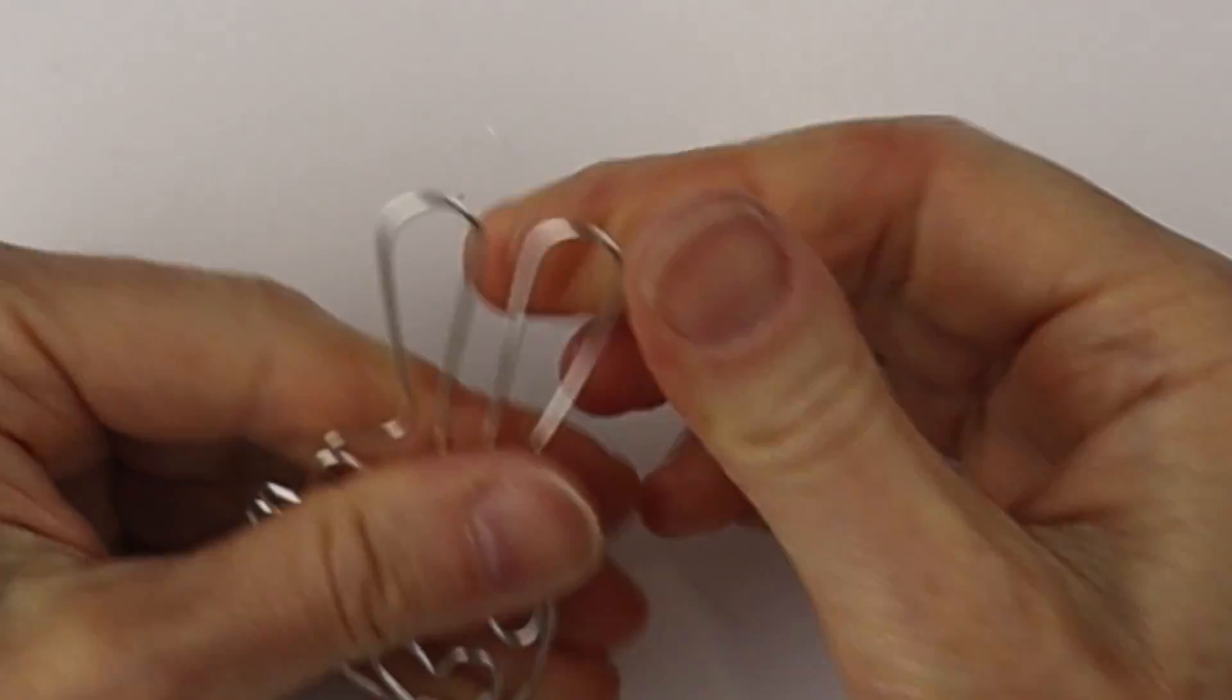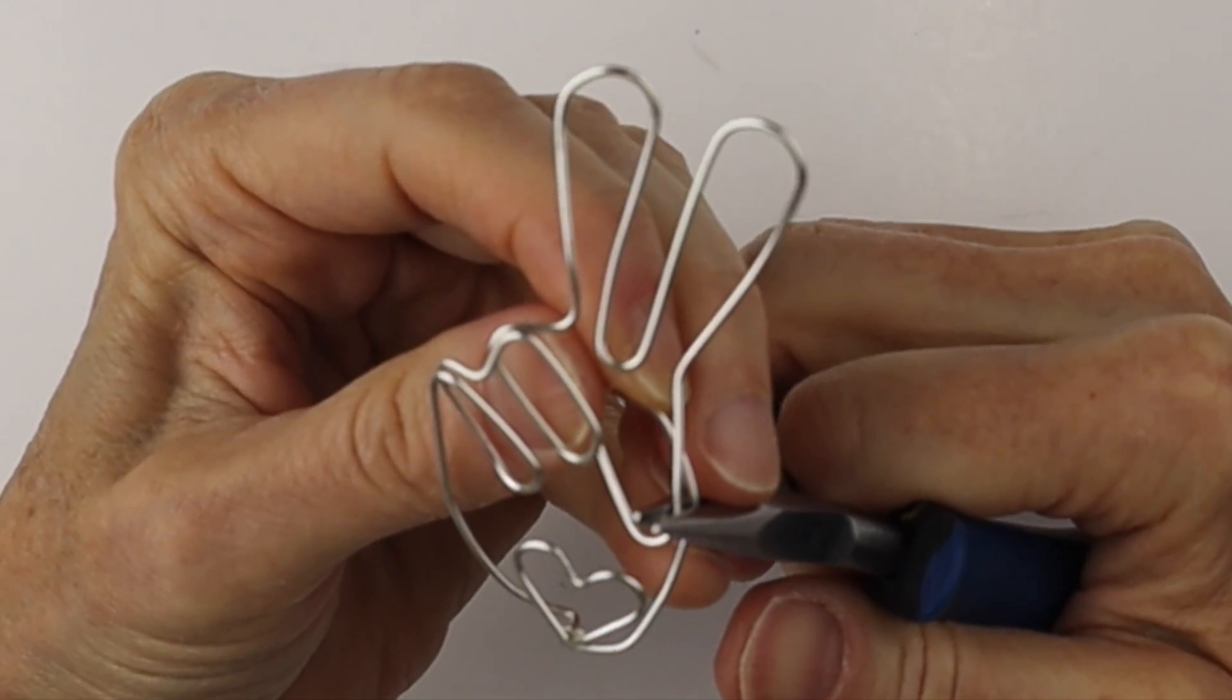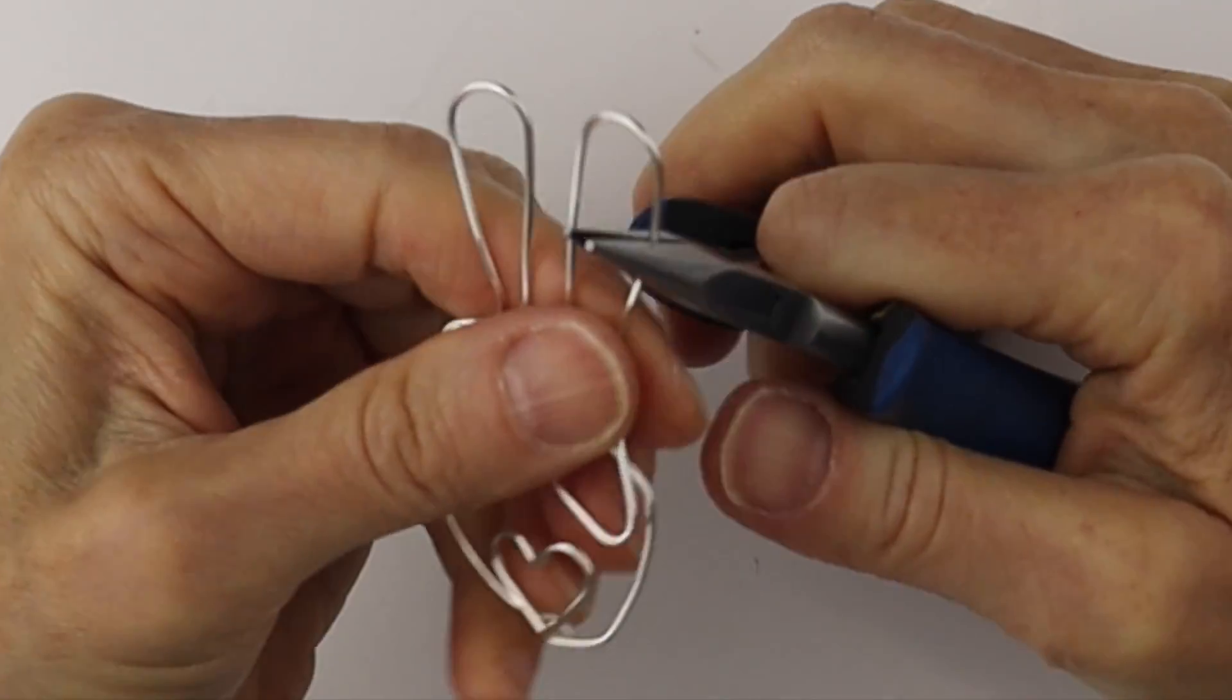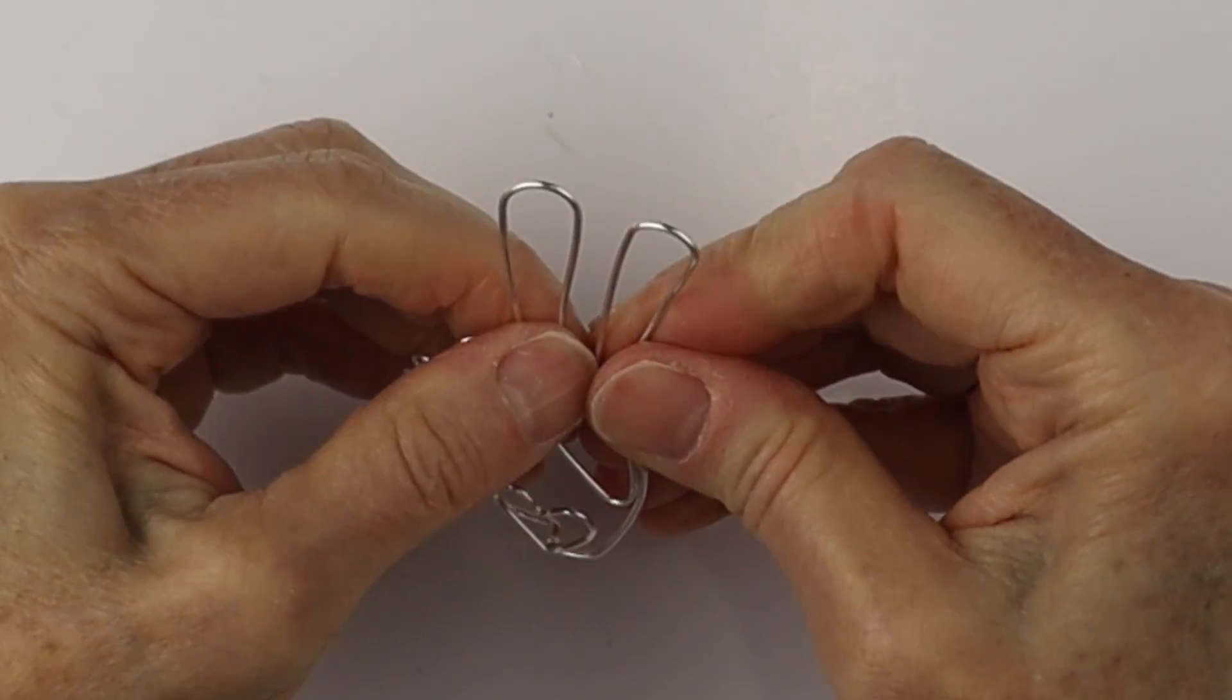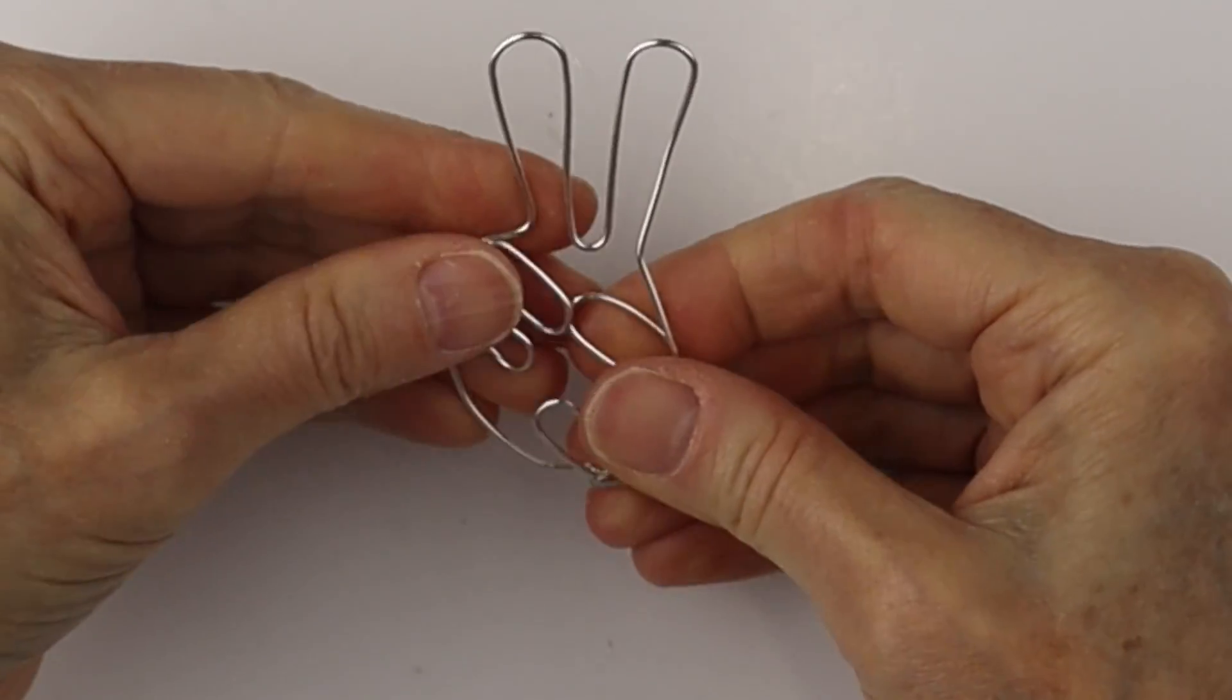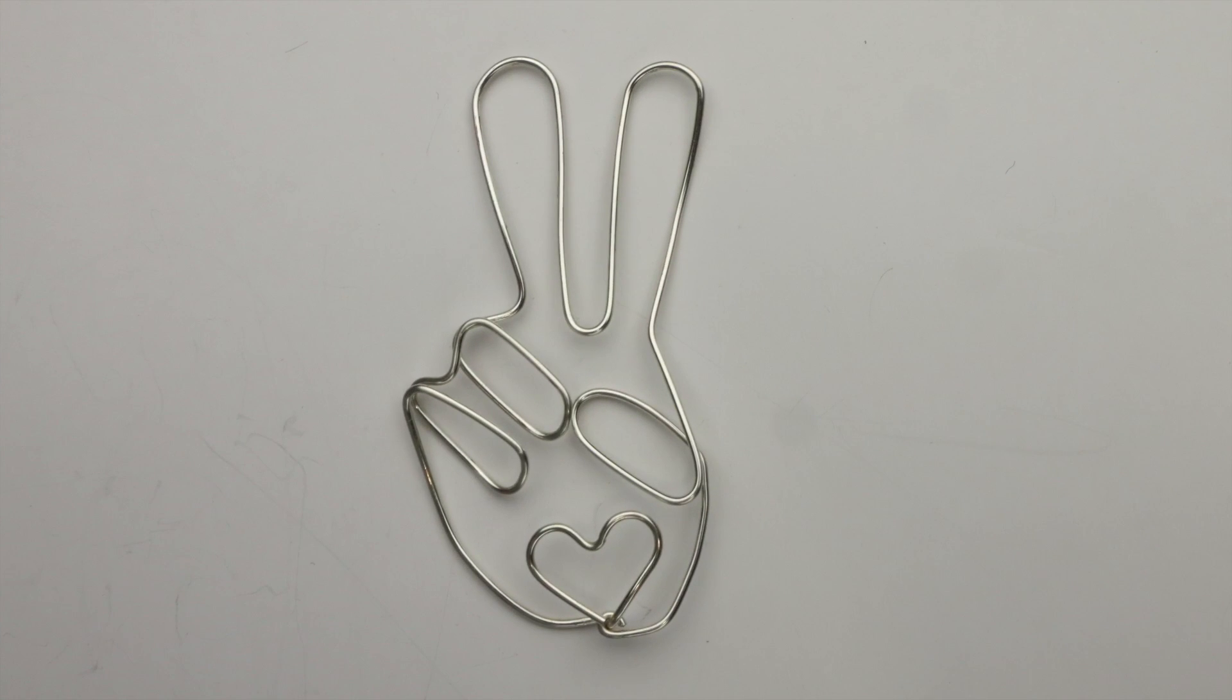And now of course you can adjust them as you need. You can get your flat pliers in there to do any more little adjustments to straighten the wire out a little bit as you need. Just keep going with it. You can hammer it a little bit if you want. And there is your simpler peace sign hand.